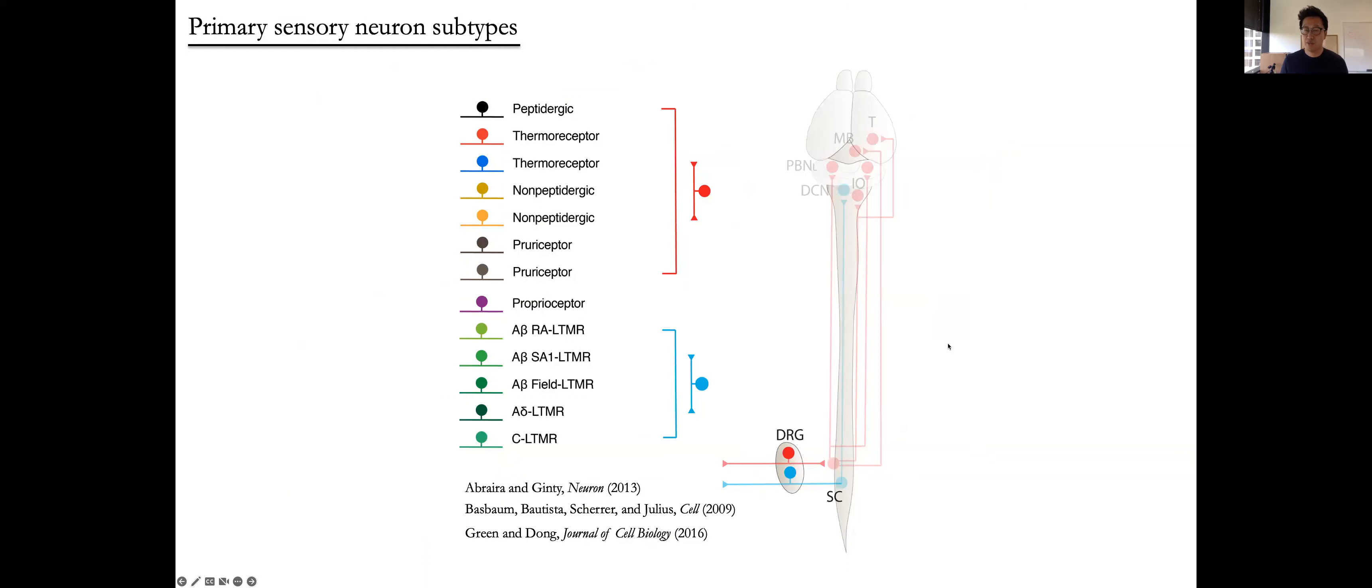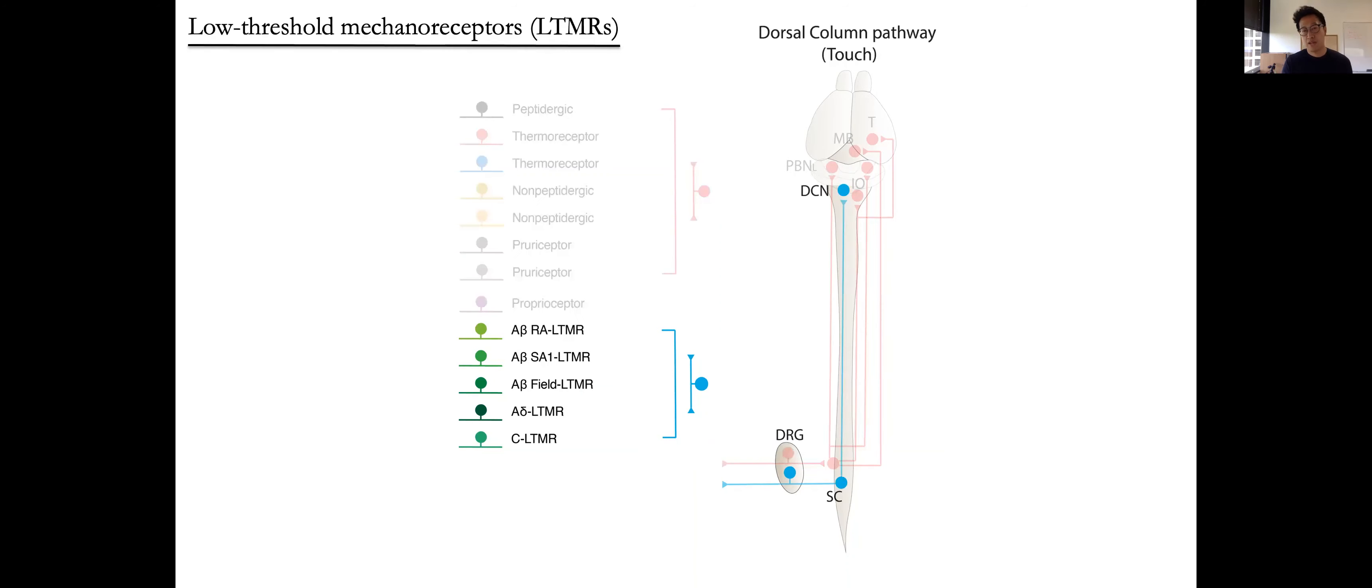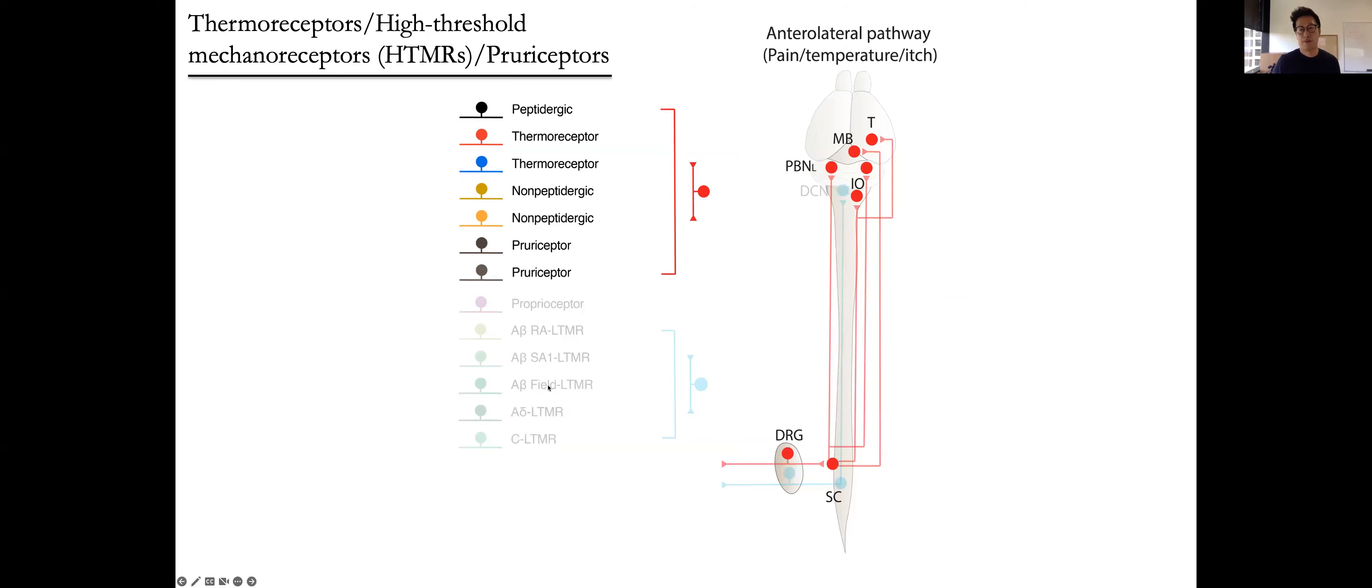Many subtypes of primary sensory neurons that innervate the skin and detect a wide range of somatosensory stimuli have been identified and well characterized. For example, there are low-threshold mechanoreceptor neurons that detect distinct features of light touch, and there are thermoreceptors, high-threshold mechanoreceptors, and proprioceptors that detect thermal and strong mechanical stimuli given onto the skin.